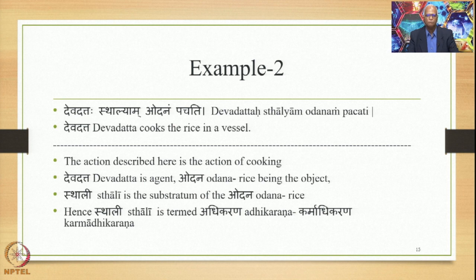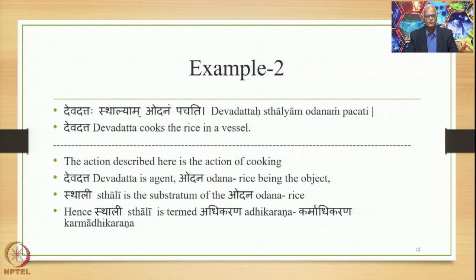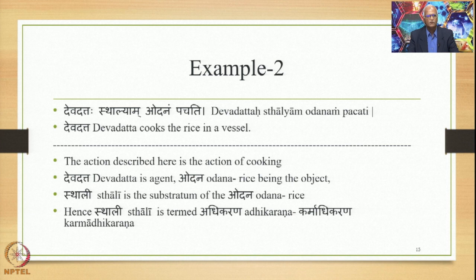Let us look at the second example: Devadatta cooks the rice in a vessel. The action described is cooking; Devadatta is the agent and Odana (rice) is the object. Sthali (the vessel) is the substratum of the Odana, and hence Sthali is termed Adhikarana. This is a Karma Adhikarana. Once again, by the sutra Saptamya Adhikaranecha, the Saptami Vibhakti is added after the word Sthali to express the meaning of Adhikarana, giving us Sthalyam.